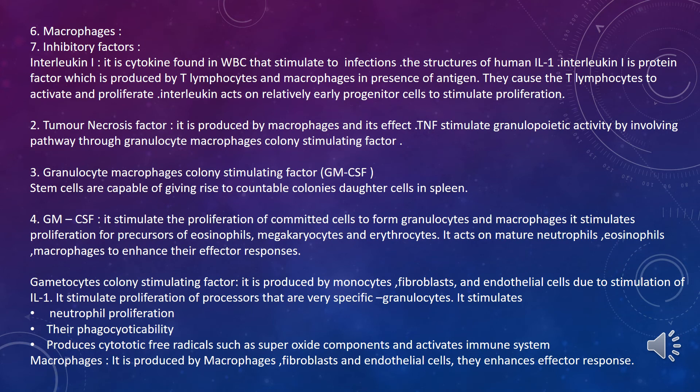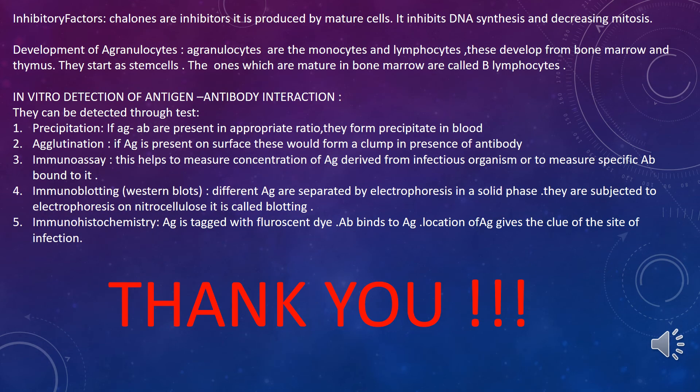GM-CSF acts on mature neutrophils, eosinophils, and macrophages to enhance effector responses, including megakaryocytes and erythrocytes. G-CSF (granulocyte colony stimulating factor) is produced by monocytes, fibroblasts, and endothelial cells due to stimulation of IL-1. It stimulates proliferation of granulocyte-specific precursors, stimulates neutrophil proliferation, enhances phagocytic capability, produces cytotoxic free radicals such as superoxide, and activates the immune system. Macrophage CSF is produced by macrophages, fibroblasts, and endothelial cells and enhances effector responses.